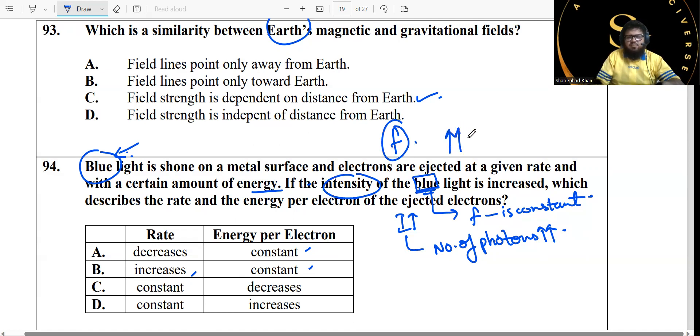Intensity is increased, but it's still blue, so this means frequency is still the same. But you are increasing the number of photons that are coming and taking in the energy, because that's how you are going to increase the intensity if you are keeping the frequency constant. So if you have more photons, then that would mean more photoelectric effect would occur, right? Which describes the rate and the energy per electron of the ejected electrons? The rate will definitely increase, but the energy will be constant due to a constant frequency. So option B is correct.